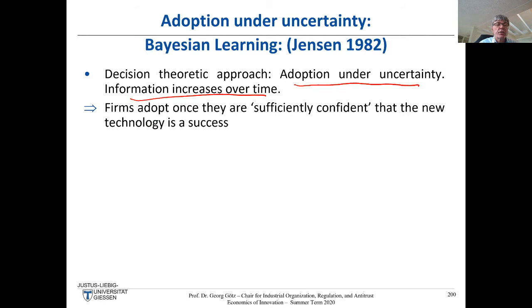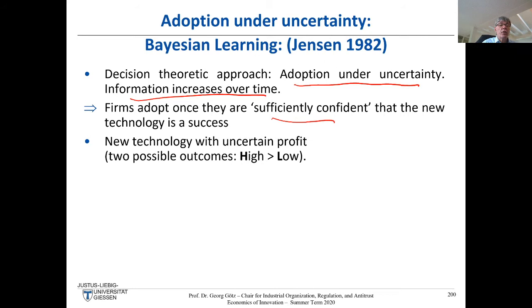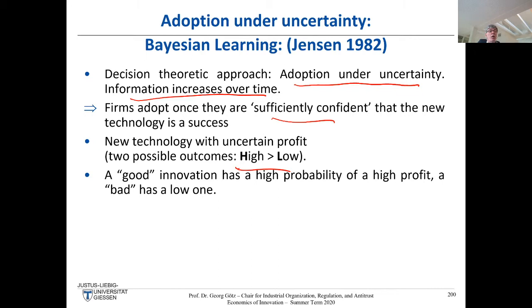This is a more explicit modeling of information acquisition. The point is that firms — our main interest here — adopt once they are sufficiently confident that the new technology is a success. As often, the new technology has uncertain profitability, and to make life easy we have only two possible outcomes: either a high profit or a low profit. A good innovation has a high probability of a high profit, and a bad innovation has a low one.